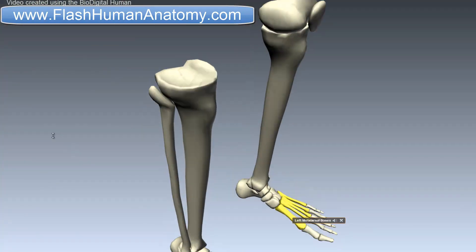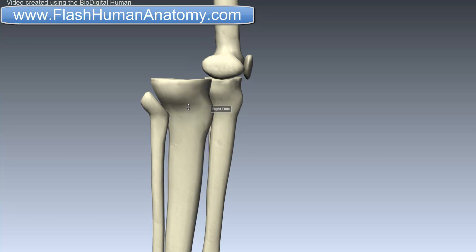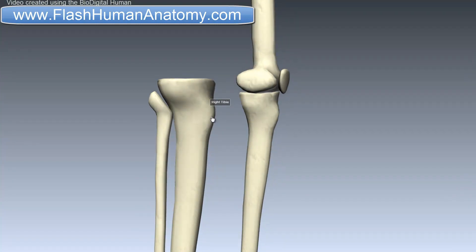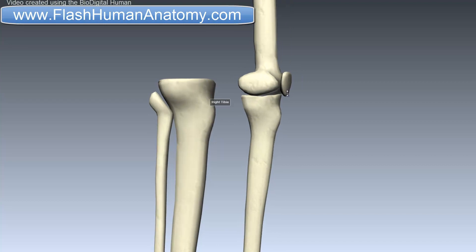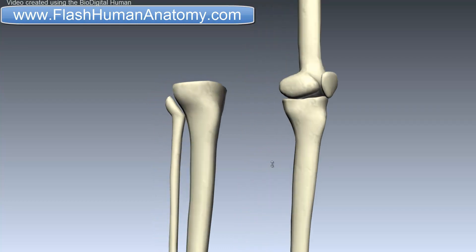Looking at it from the front, this should be the tibial tuberosity — or maybe even here — the tibial tuberosity. Below that there should be an attachment for the patellar ligament. As you can see, here is the patella, and the patella is simply a continuation from the tendon of the quadriceps muscle. The tendon comes down onto the patella, and from the patella the ligament goes down and attaches on the tibia.